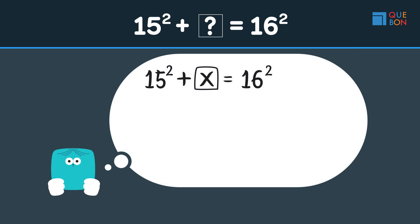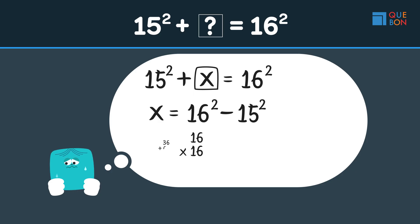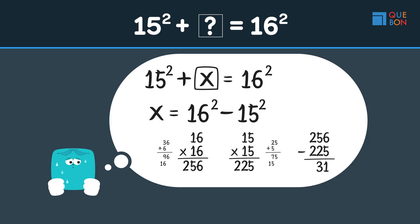This is Sweaty's method. Sweaty replaces the square box with x. To find x, Sweaty moves 15 squared to the other side to get x equals 16 squared minus 15 squared. Then Sweaty works hard to manually calculate 16 times 16 and 15 times 15, which he finds equals 256 and 225 respectively. Next, Sweaty subtracts 225 from 256 to get 31 as his final answer.